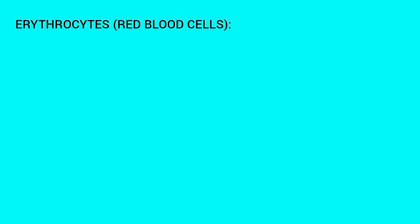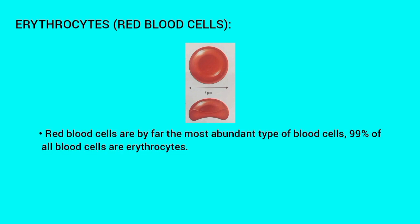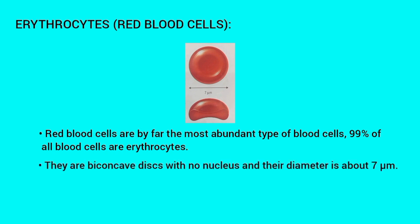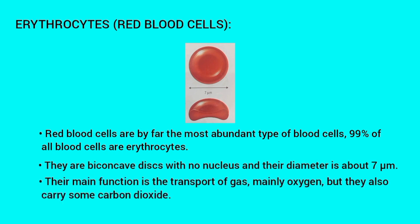Let us see about erythrocytes. This is the structure of erythrocytes. Red blood cells are by far the most abundant type of blood cell — 99% of all blood cells are erythrocytes. They are biconcave discs with no nucleus, and the diameter is about 7 micrometers. Their main function is the transport of gas, mainly oxygen, but they also carry some carbon dioxide.